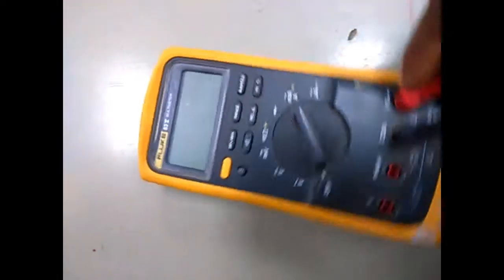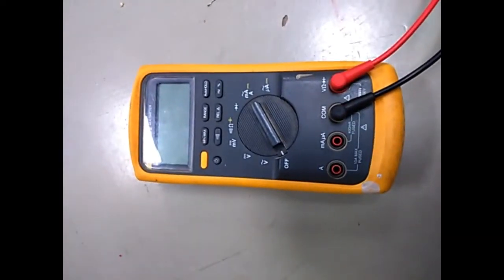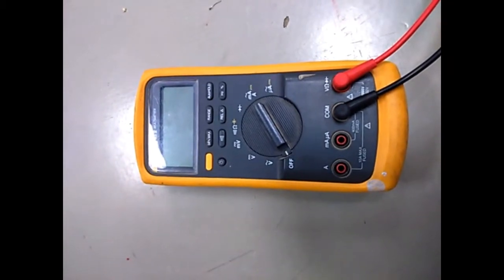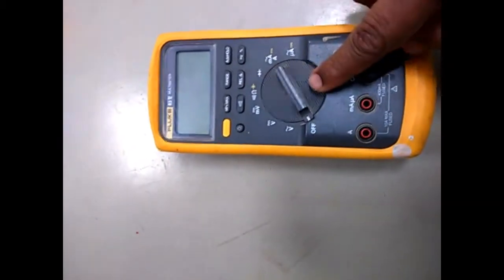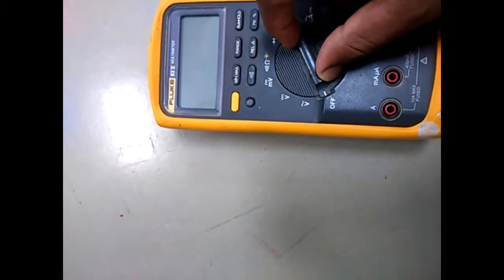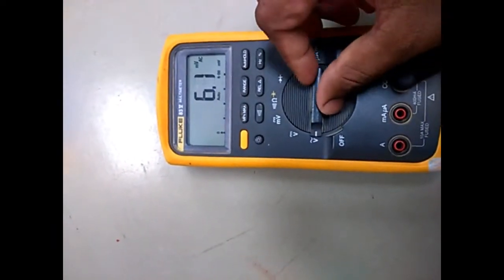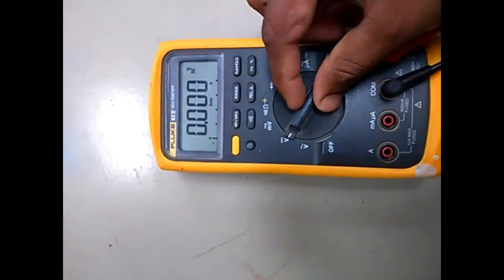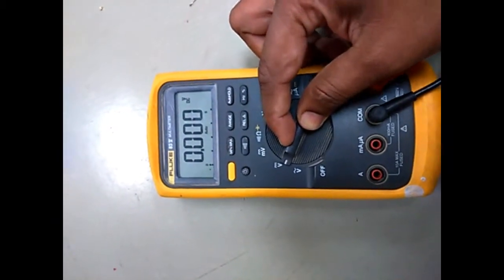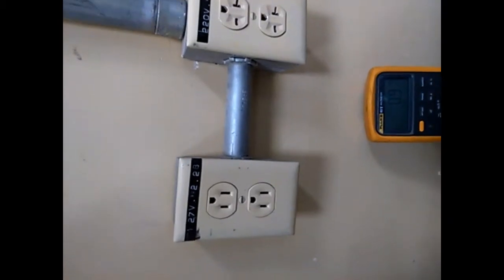The setup is now complete. The multimeter is ready, and you can check the voltage. First, we have to set the dial to the designated section for AC voltage. This is for AC voltage, and this is for DC voltage. When we are using it in households, we will use AC voltage.